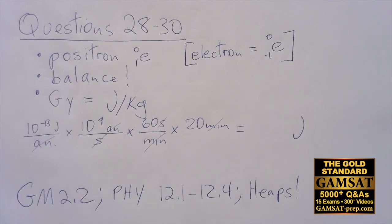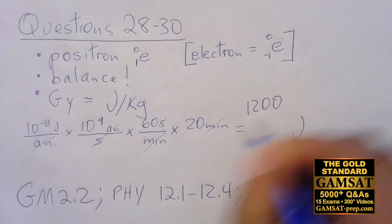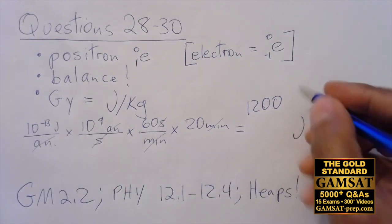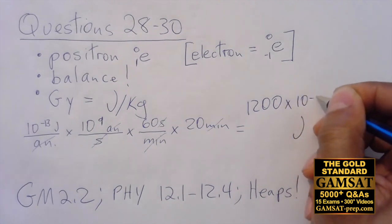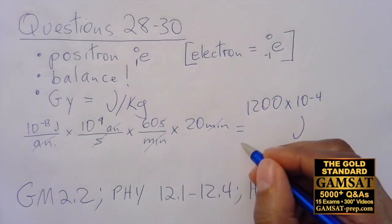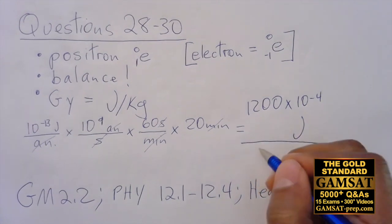Now it's just the numbers and the numbers is the easiest part. What do we have here? I have 60 times 20, so that's 1200, and I have 10 to the minus 13 times 10 to the 9, that's 10 to the minus 4. So I have 10 to the minus 4 joules, and then I'm going to divide this by 60 kilograms in order to get to the grays.